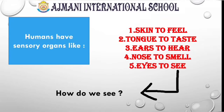We all know that humans are made up of many organs and each of them performs specific functions. Sensory organs are one of those. They help us to feel, taste, hear, smell and see. These sensory organs involve skin, tongue, ears, nose and eyes respectively. In today's discussion we are going to know about how do we see through our eyes.